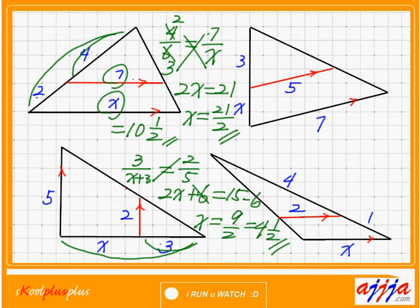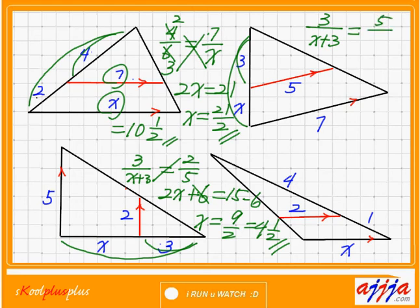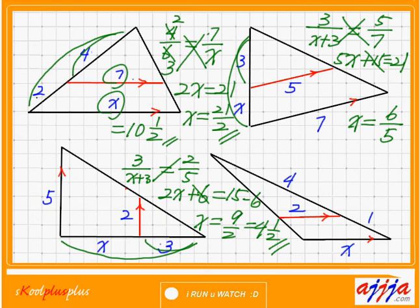What about this one — right-hand side top? Very similar: 3 to X plus 3 equals 5 to 7. Cross multiplication: 5X plus 15 equals 21. Move 15 to the right-hand side — minus 15 — which is 6. X equals 6 divided by 5, which is 1.2, or 1 and one fifth.